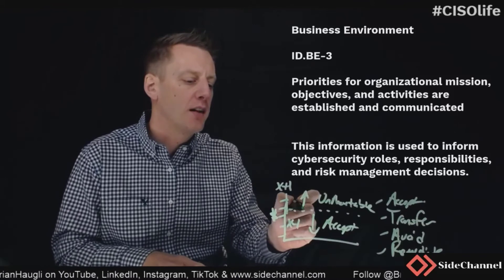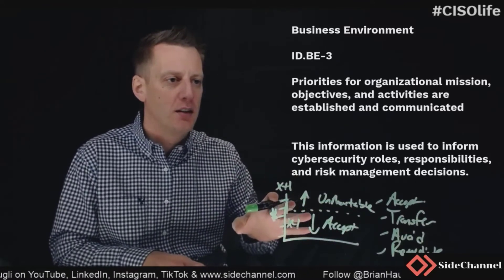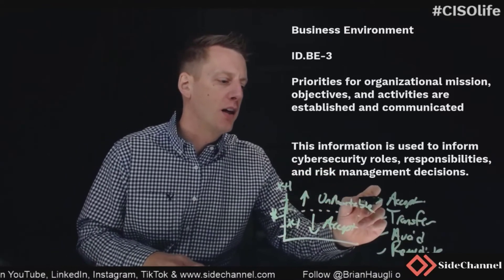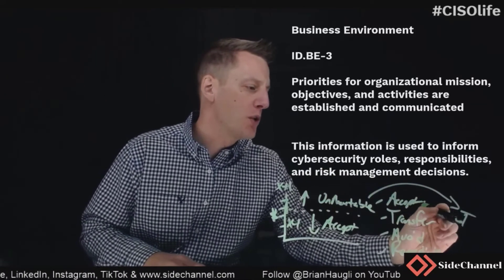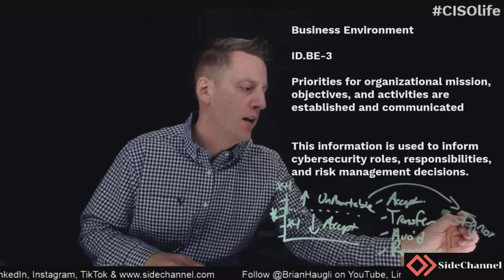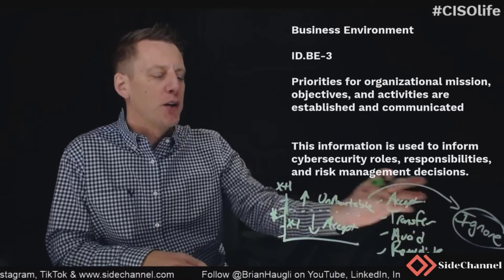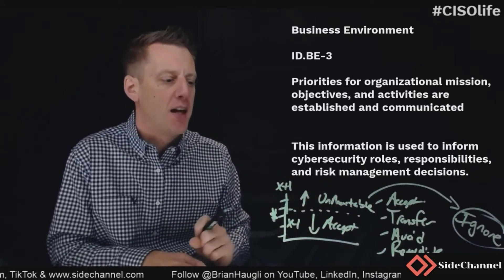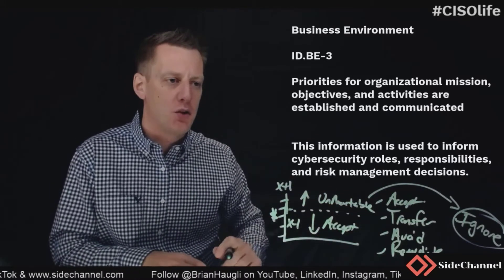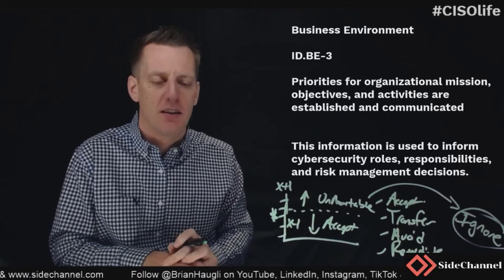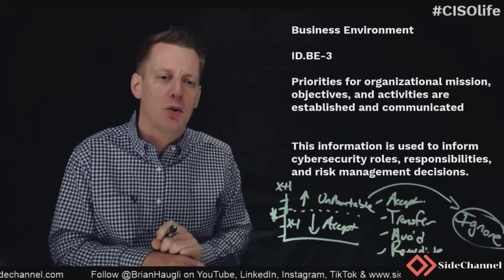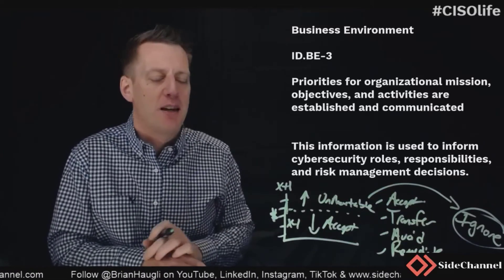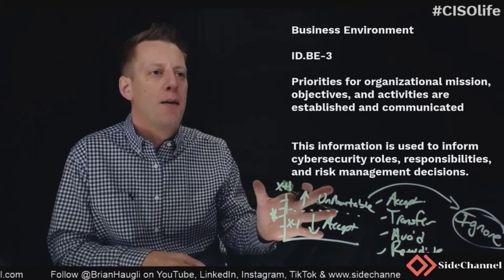Too often, organizations move things into what I call the 'ignore bucket.' This is where organizations look at what they have and choose not to make a decision about the risk presented to them. That is not a plausible or appropriate fifth method within risk management.